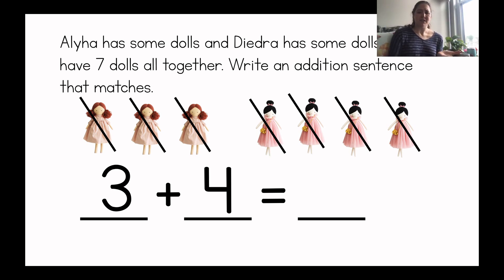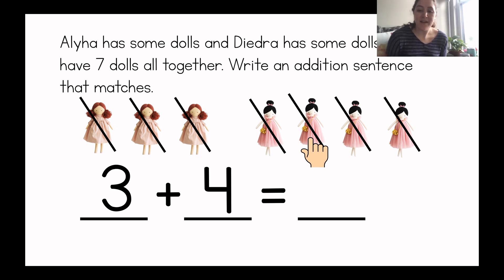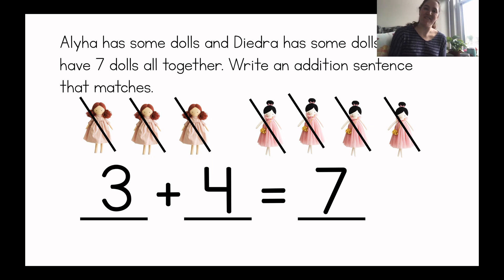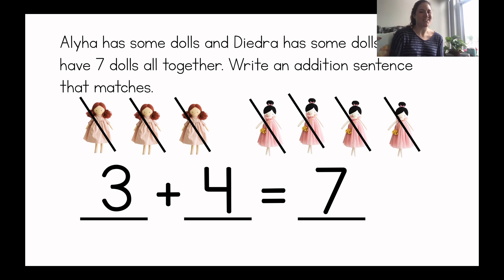So I wrote a three because Aaliyah has three dolls, and then I wrote a four because Deidre has four dolls. How many do they have all together? I remember from the word problem that they have seven, but I'm going to count just to double check. I'll point and count. One, two, three, four, five, six, seven. So there are seven dolls, so I'll write a seven. So I wrote a number sentence that matches the picture. Three dolls plus four dolls equals seven dolls all together.